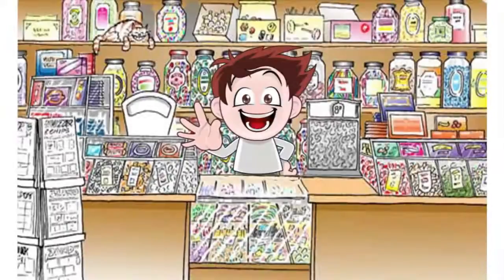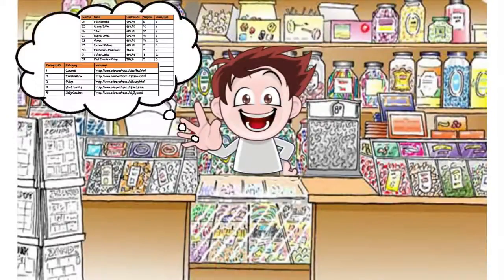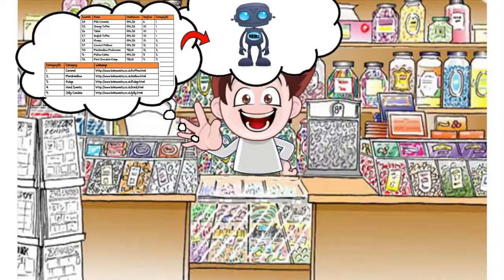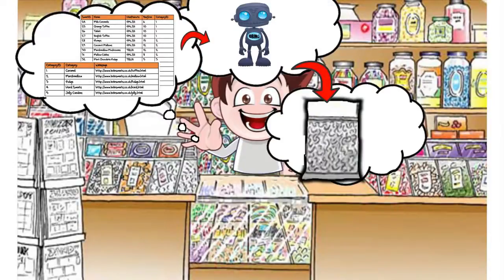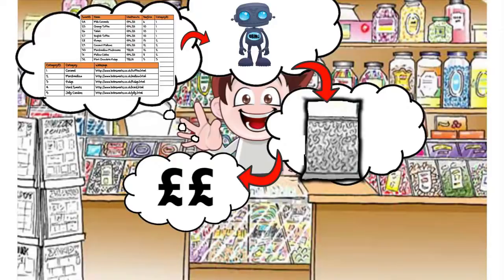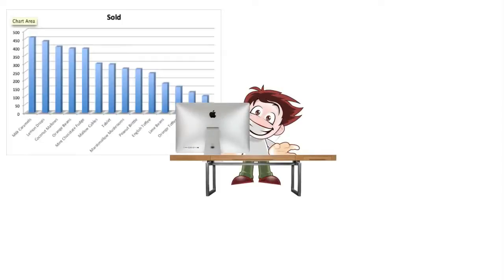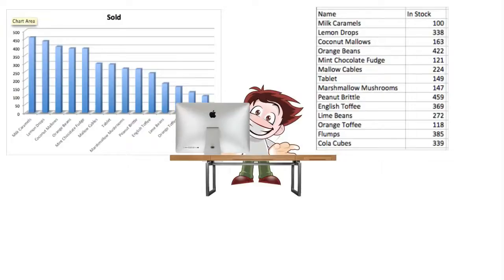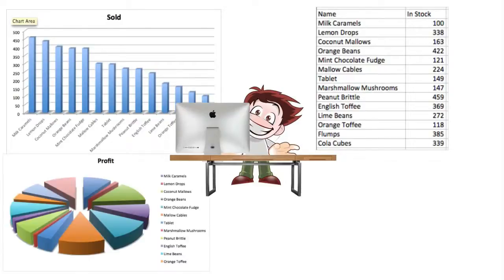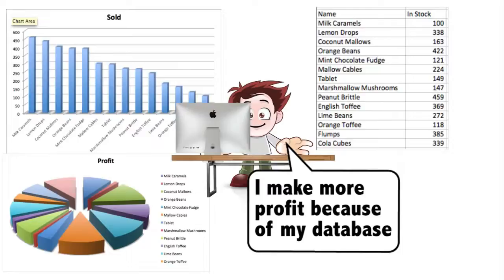Bob is really happy with his database of linked tables. He has linked it to the till in his shop so that when he sells some sweets it gets updated automatically. This means he can see which sweets are the most popular, which sweets he needs to restock, and which sweets also make the most profit. Bob's database helps make his business better.